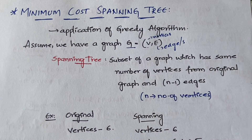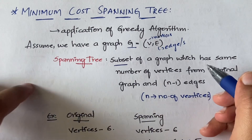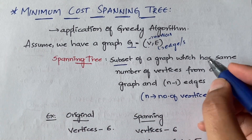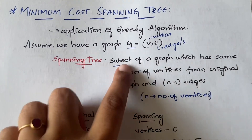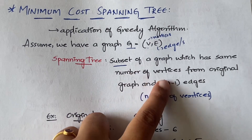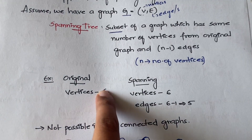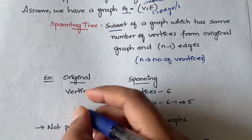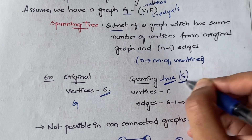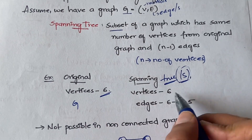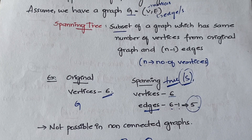A spanning tree is nothing but a subset of that graph which will have the same number of vertices as the original graph and n minus one number of edges, where n is the number of vertices. For example, if you have six vertices in the original graph, then in the spanning tree S you will have the same six vertices but only five edges — that is six minus one.